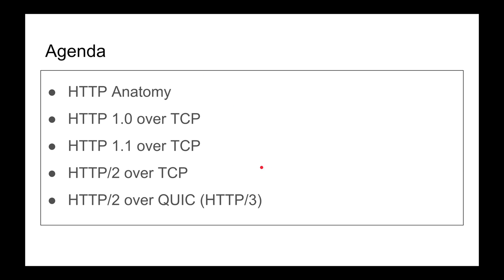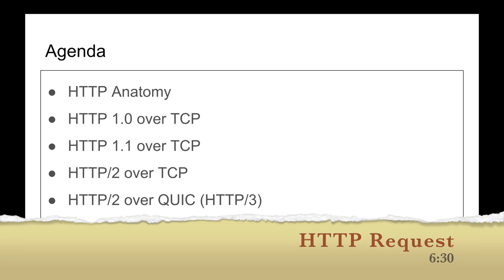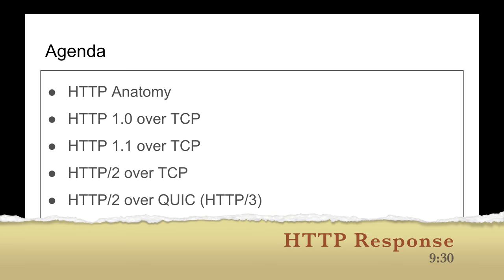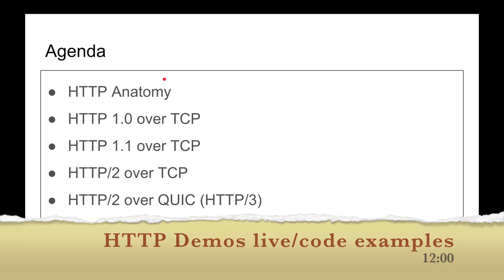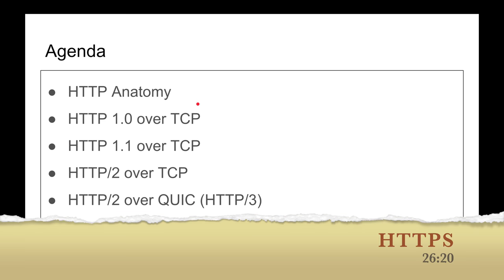Here's the agenda. We're going to talk about the HTTP anatomy — essentially this Layer 7 concept — and how it is a client-server architecture. We're going to show you what an HTTP request looks like, what a response looks like, and then talk about HTTP 1.0 over TCP — the first version, released around 1996.